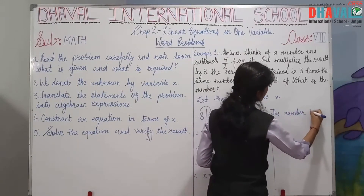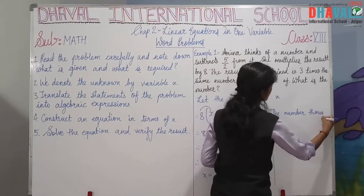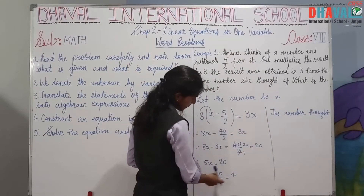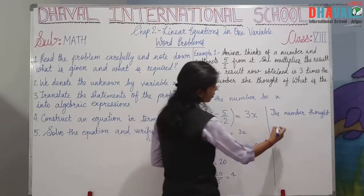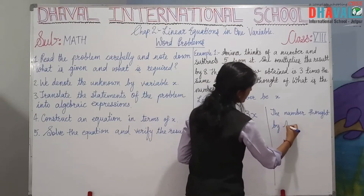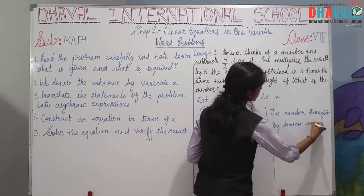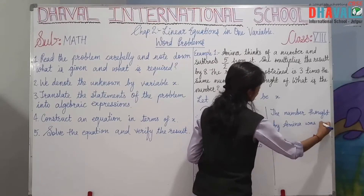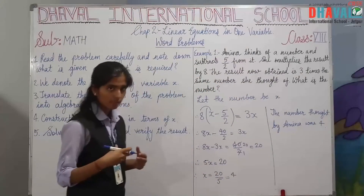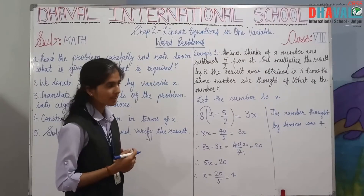Lastly, हम statement देंगे: the number thought by Amina was 4. जो Amina ने number सोचा था वो 4 था — x था और x = 4 आया। अब अगर आप चाहें तो आप इसको verify भी कर सकते हैं।